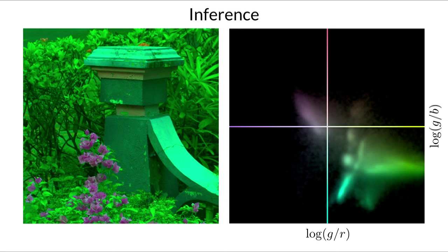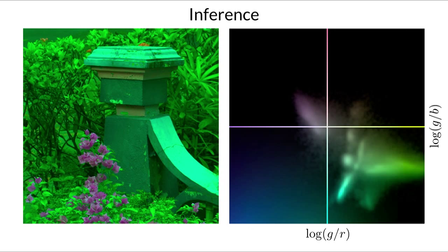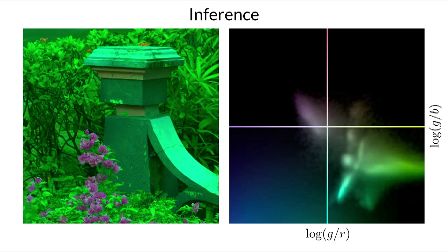At test time, the input image is turned into a log chrominance histogram, which is then convolved with our learned set of weights, resulting in a probability distribution over likely white points. The most likely white point is then used to untint the input image.